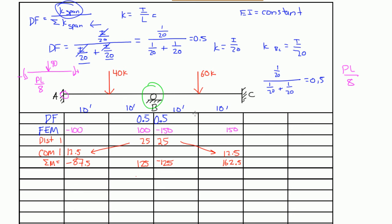Welcome back. In the last video we finished up this moment distribution example. In this video we're actually going to figure out what the reactions at A, B, and C are. To find these reactions we need to do three things: figure out the direct shear, the auxiliary shear, and the total shear at each of the joints.